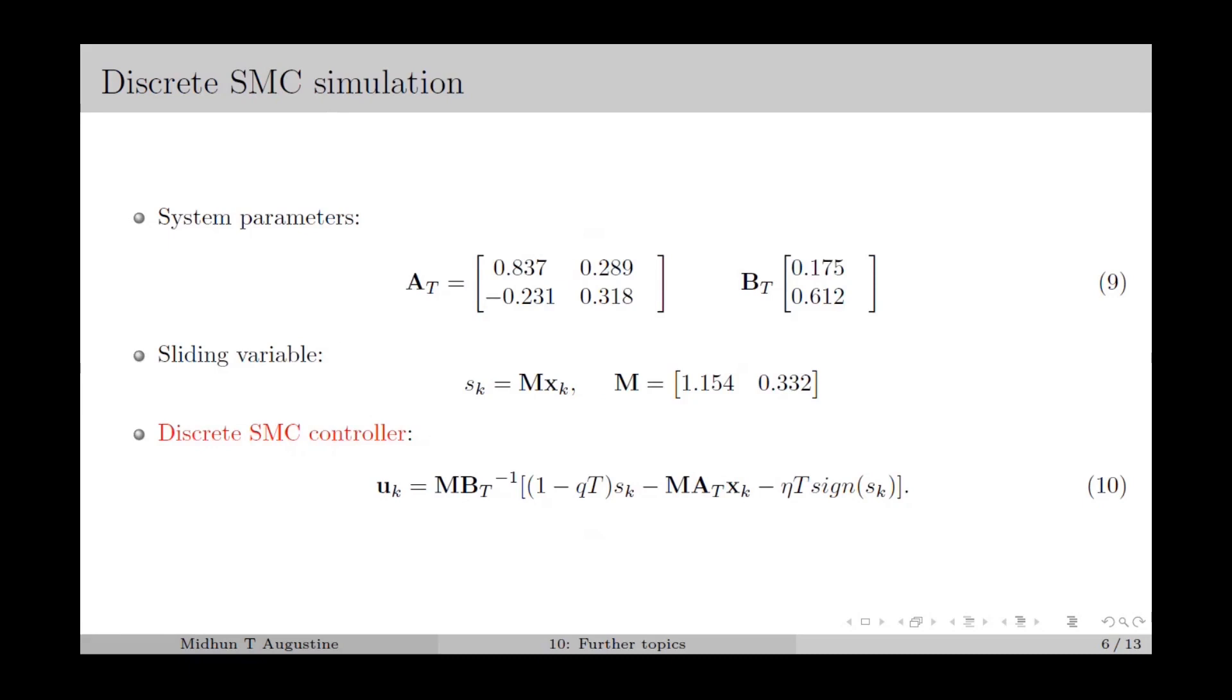Next, consider an example with a discrete-time LTI system having system matrix A_T and input matrix B_T as in equation 9. The sliding variable is chosen as s_k = M·x_k with M as specified.